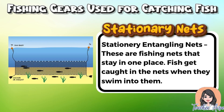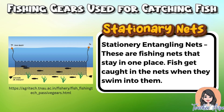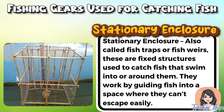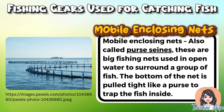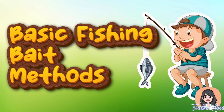Stationary entangling nets are fishing nets set in a fixed position in the water. Fish become trapped when they accidentally swim into the net and get tangled in its mesh — often used in shallow coastal areas or rivers. Stationary enclosures, also called fish traps or fish weirs, are fixed structures placed in water to guide fish into an enclosed area. Mobile enclosing nets, also called purse seines, are large fishing nets used in open waters to surround a school of fish; the bottom of the net is then pulled tight to prevent escape.